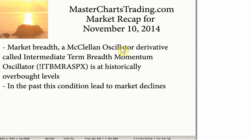It's a derivative of the McClellan breadth oscillator and there is an explanation of how it's calculated. The point of the matter is today was interesting because this ITBM oscillator for the S&P 500 actually exceeded a level of 200, which is very high. In the past there were only three times that I was able to find that ITBM was that high.